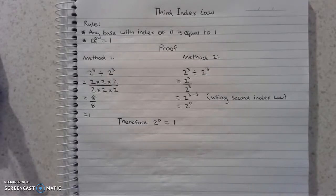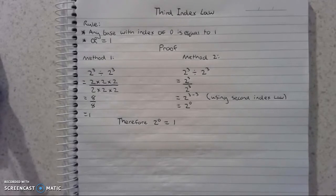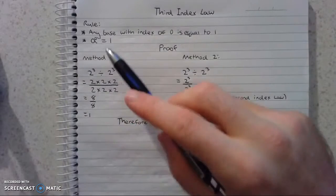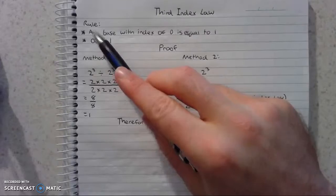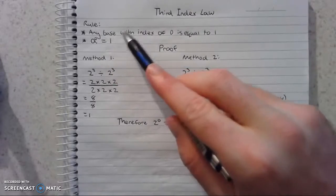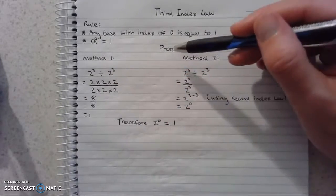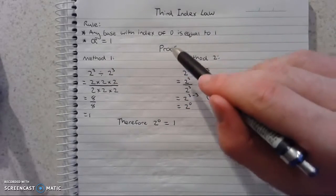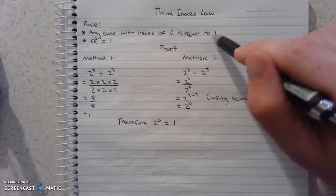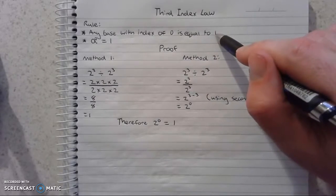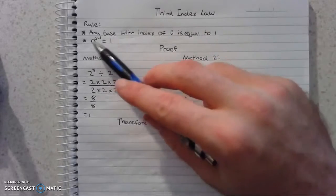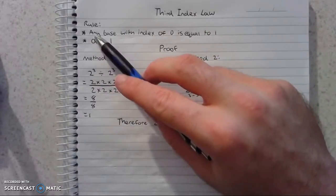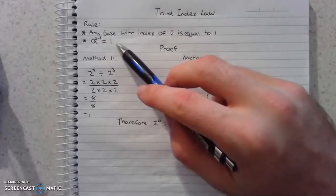Hey guys, how's it going? In this video I'm going to show you how to apply the third index law. The third index law states that any base with an index of 0 — a power of 0 — is equal to 1. That can be written as a to the 0 equals 1.